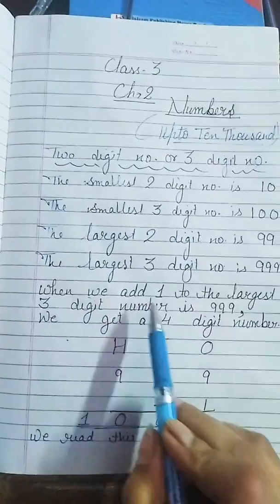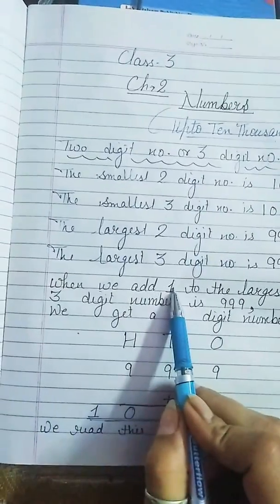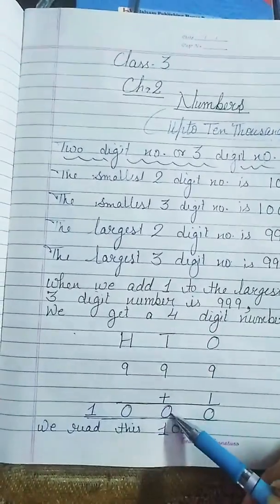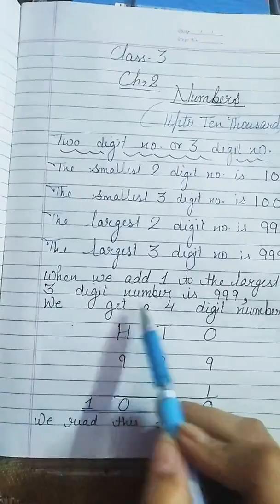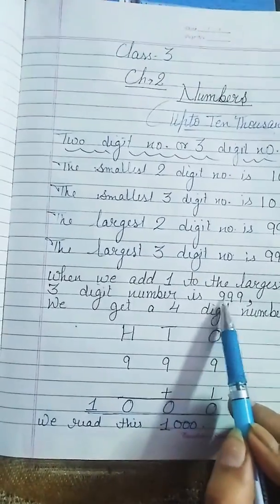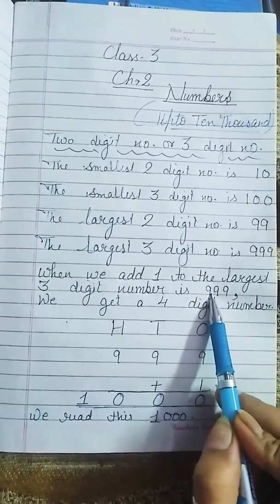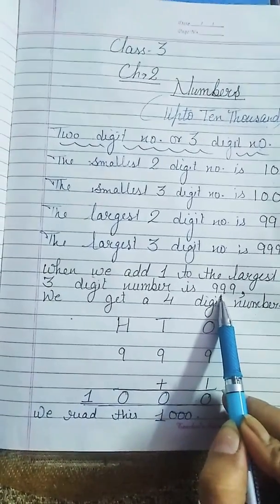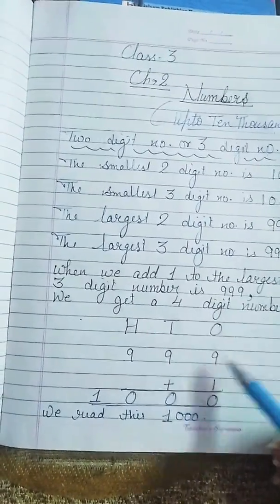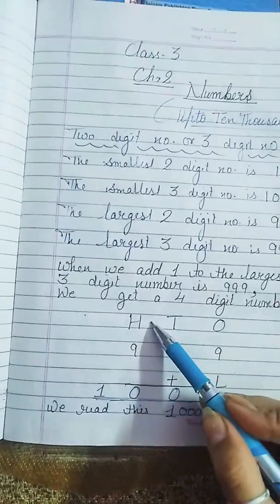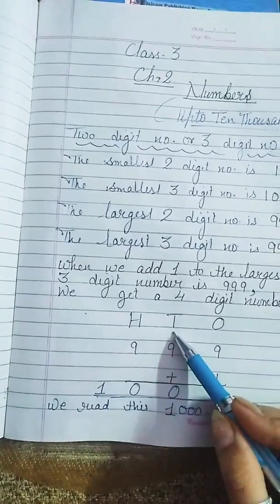Well, when we add 1 to the largest 3-digit number, je hum 3-digit number me 1 add kareenge, then what do we get? 1000. Like when we add 1 to the largest 3-digit number, 999, we get the 4-digit number. Like this. Once 9, tenth place pe kya hai? 9. Hundred place pe kya hai? 9. Means 9 plus 1, 10: 1, 0. 9 plus 1, 1, 0. And 9 plus 1, 1, 0.